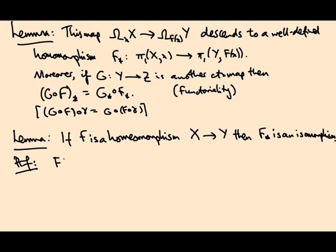Well, f inverse star composed with f star equals f inverse compose f star. So that equals the identity star. What is the identity star? It's the identity on fundamental group. Alright, because the identity just takes a loop to itself. Okay, so this proves that f star is an isomorphism because it has an inverse.